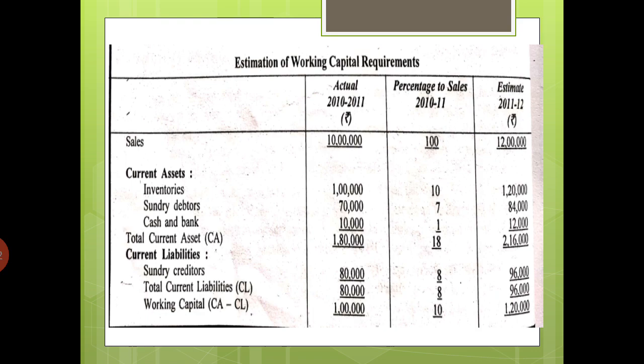Now we move to the last column — estimation of working capital based on projected sales of 12 lakhs. For each item, we apply its percentage to 12 lakhs. Inventory at 10% of 12 lakhs is 1 lakh 20,000. Sundry debtors at 7% of 12 lakhs is 84,000. Cash and bank at 1% of 12 lakhs is 12,000. Creditors at 8% of 12 lakhs is 96,000. The difference gives working capital of 1 lakh 20,000.